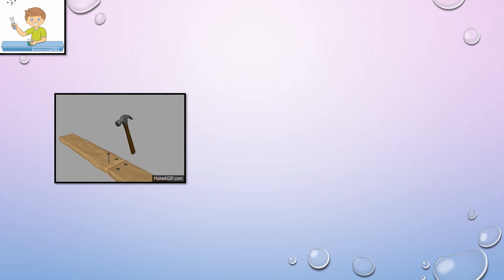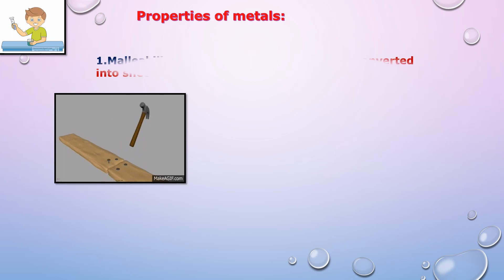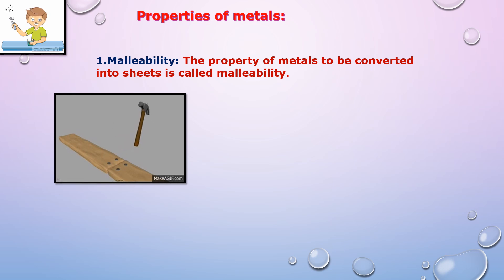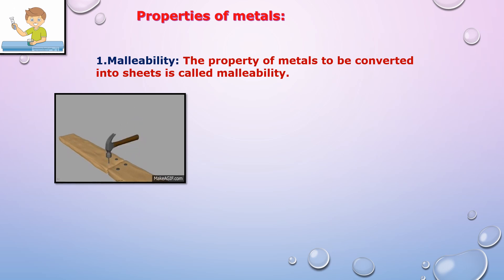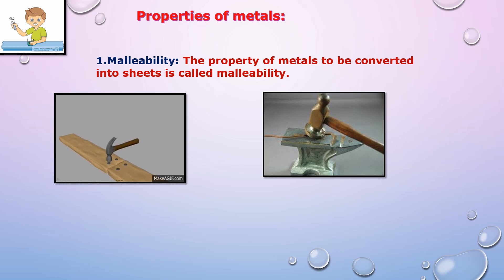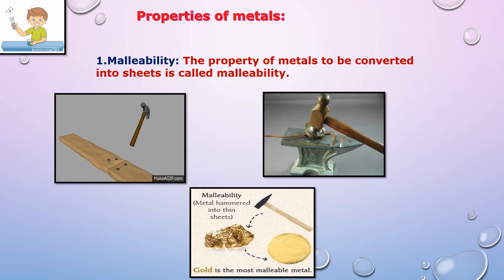We will now see the properties of metals. The property of metals to be converted into sheets is called malleability. Activity: Take a piece of copper or aluminium wire or a small nail and hammer it repeatedly. On hammering repeatedly, the wire becomes flat and forms a thin sheet. Metals can be converted into sheets by hammering — this property is called malleability.